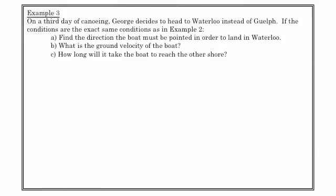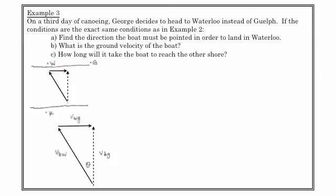So on a third day of canoeing, George decides to head to Waterloo instead of Guelph. So now he doesn't want to end up in Guelph. He doesn't want to let the river push him downstream. So the conditions are the exact same as they were in the previous example. But now, let's find the direction that the boat has to be pointed in order to end up in Waterloo. So here's a very similar diagram again. But now what you'll notice is that he's got to angle himself into the current so that the current will push him back and he'll end up going straight across the river. And it's this angle theta that you can see here in our triangle diagram that we want to find.